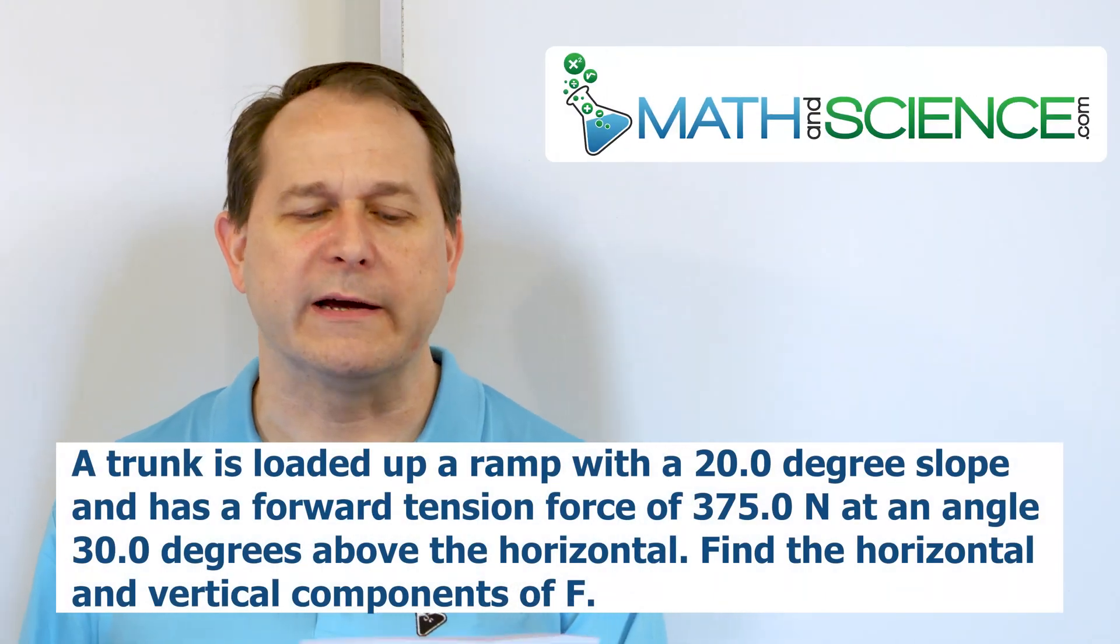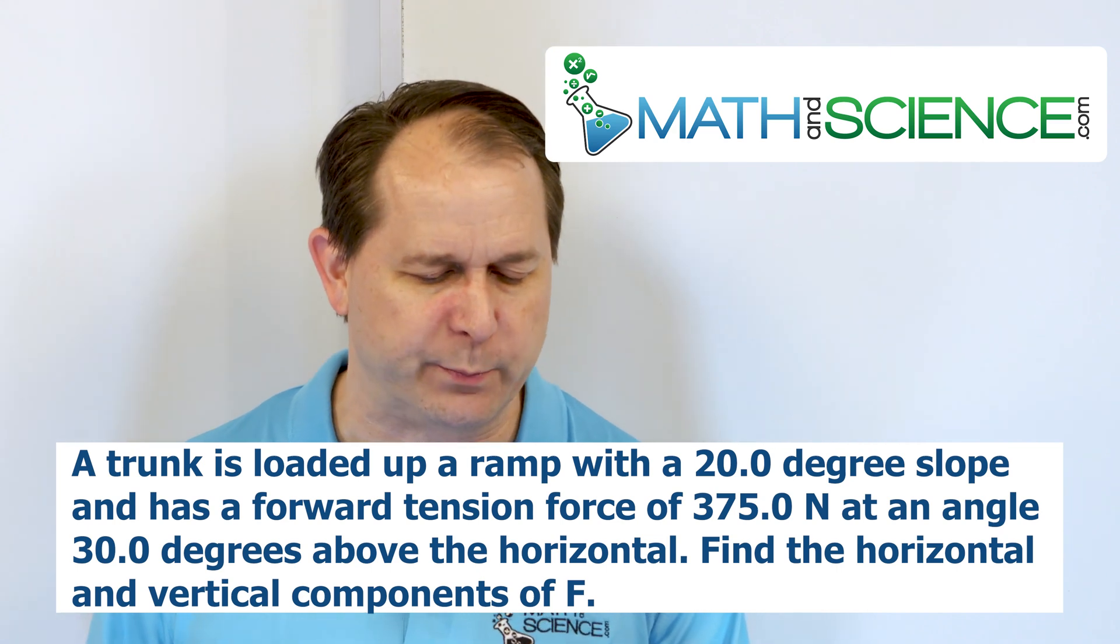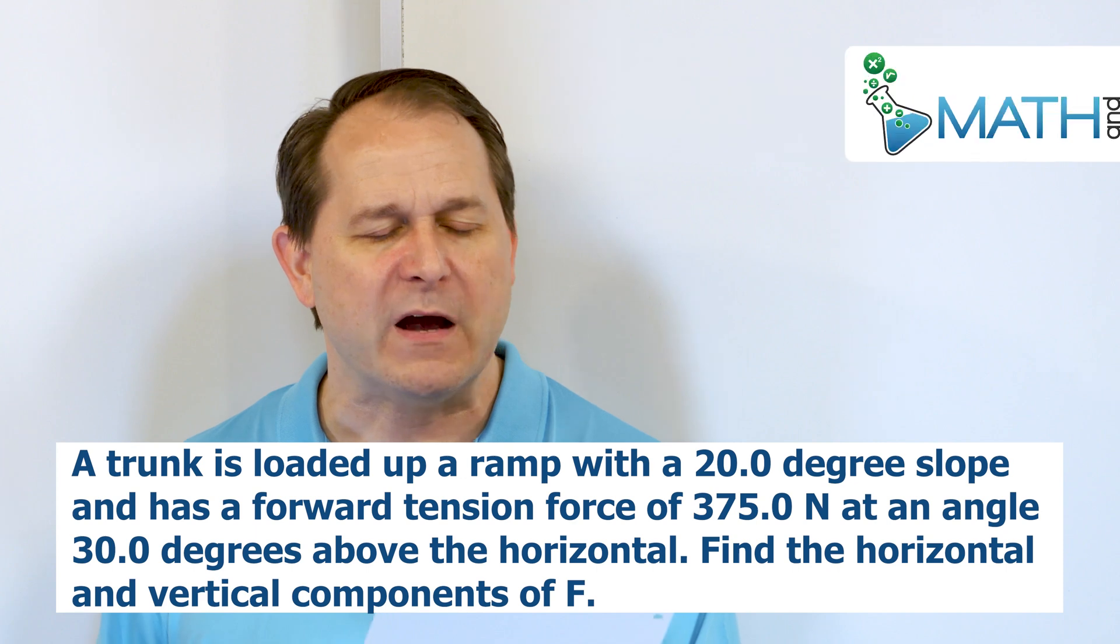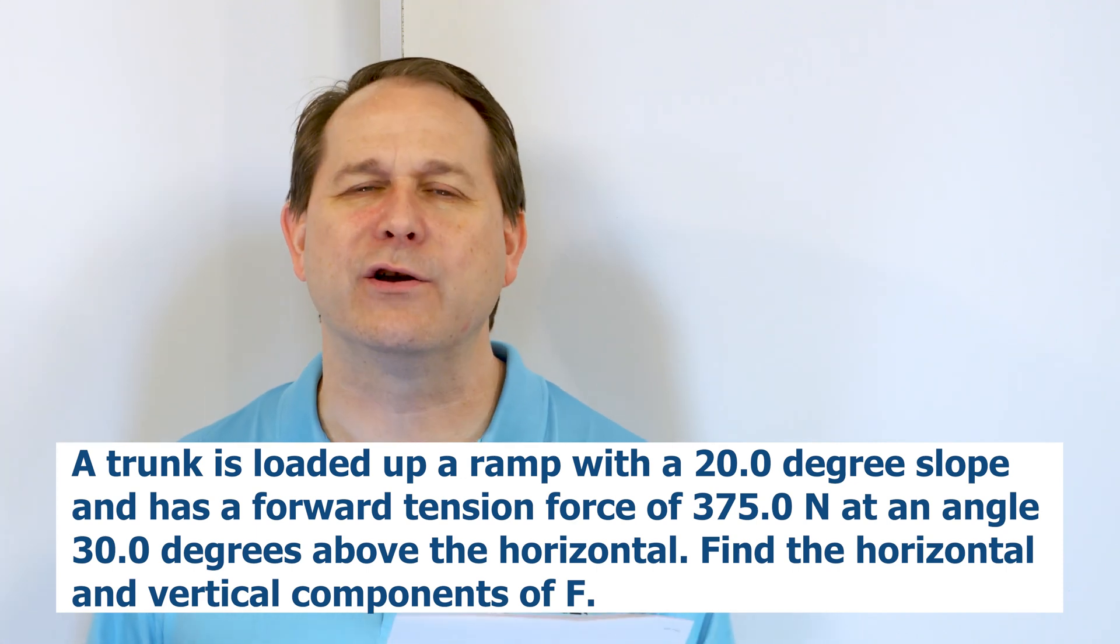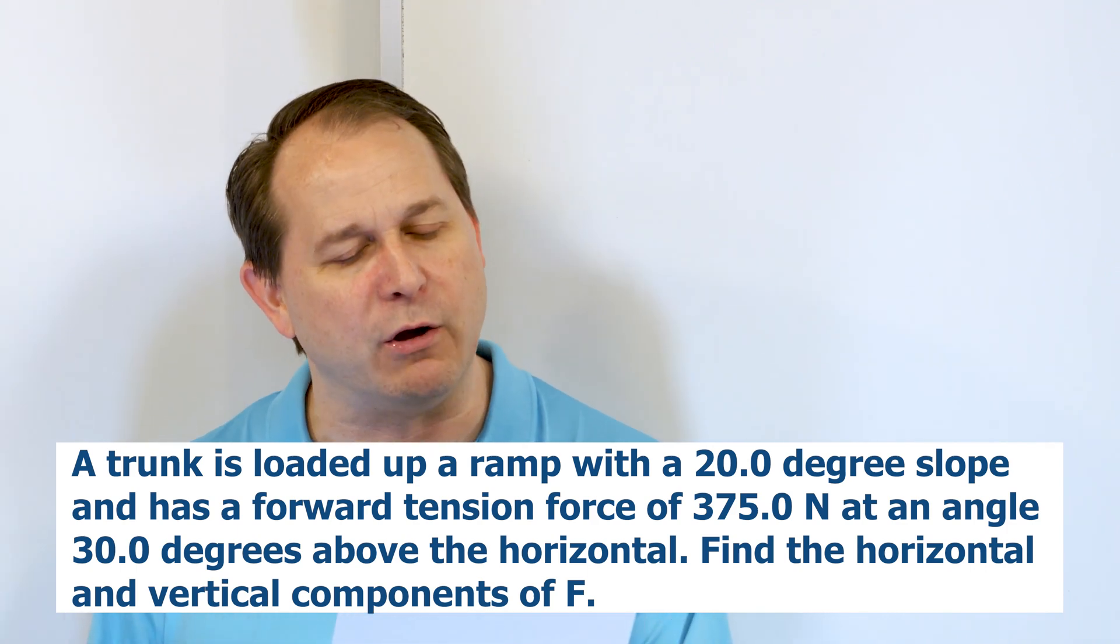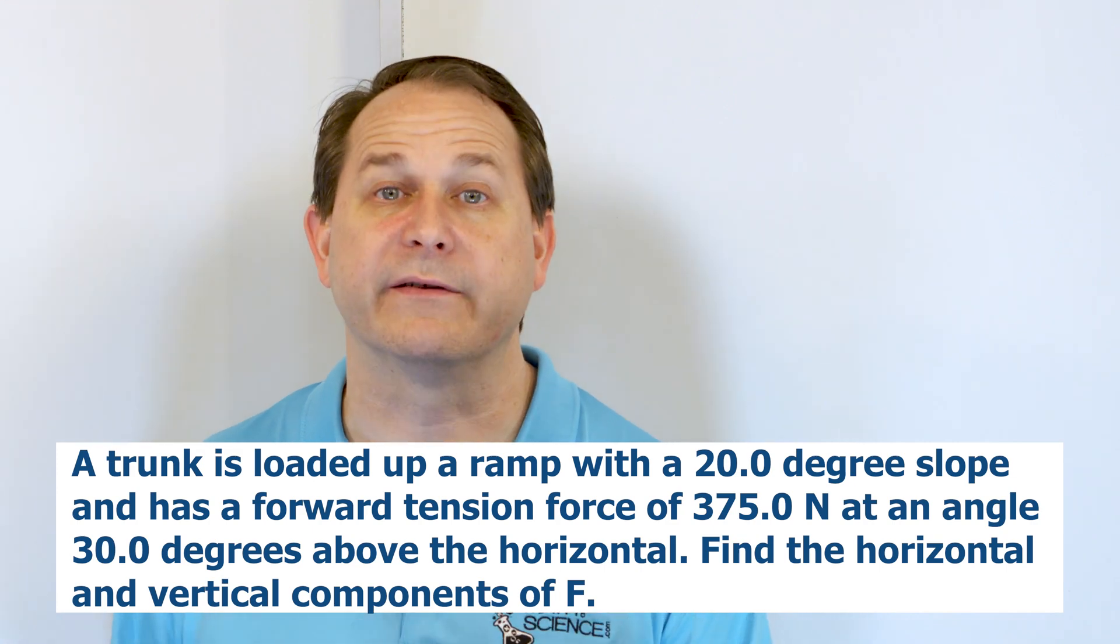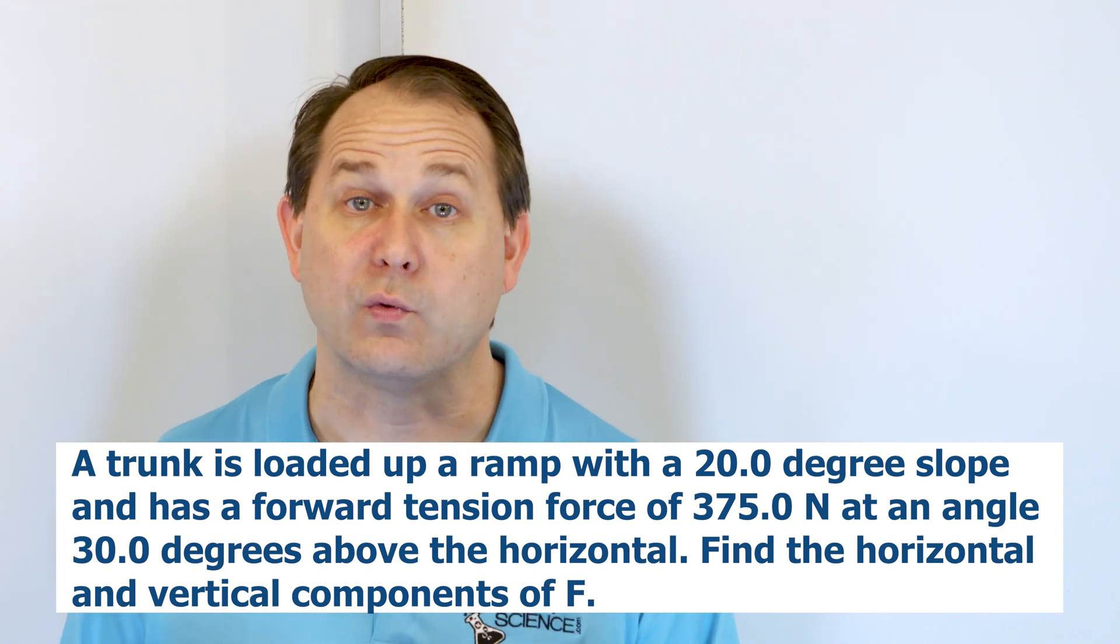So here we are. A trunk is being loaded up a ramp with a 20.0 degree slope. The trunk is subjected to a forward tension force of 375.0 newtons that is situated at an angle of 30 degrees above the horizontal that is parallel with the slope of the ramp. Find the horizontal and vertical components of the force F or the tension T there that's in the rope there.